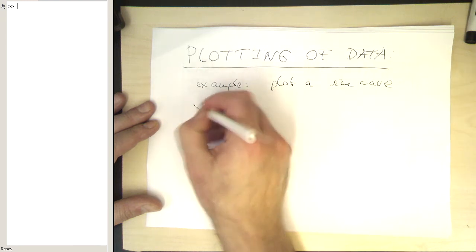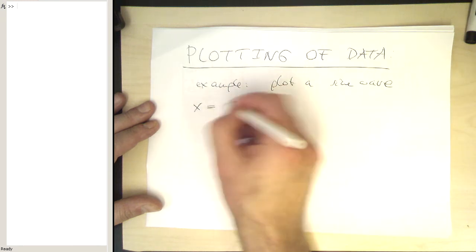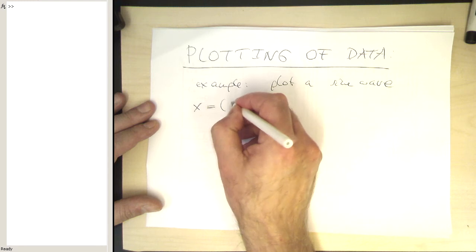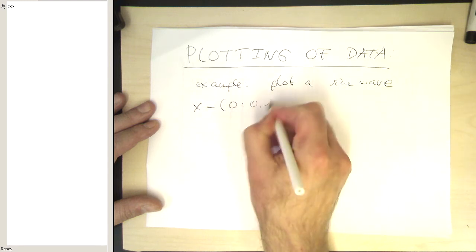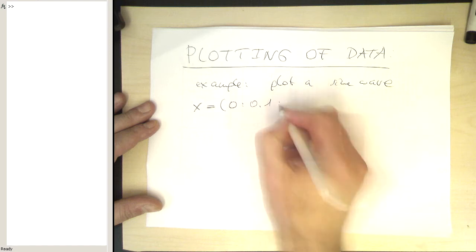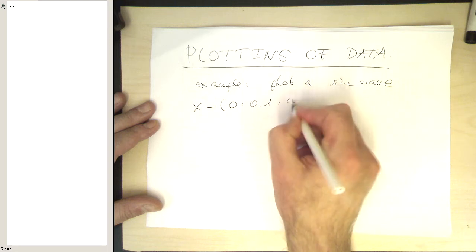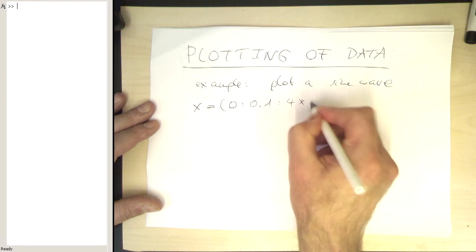So let's create an X vector with just different values starting at 0 and then let's create a step width of 0.1 and run this to 4 times pi.